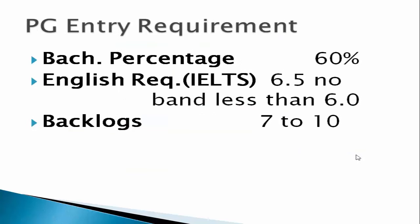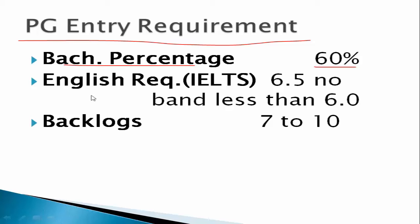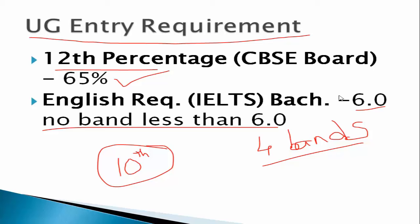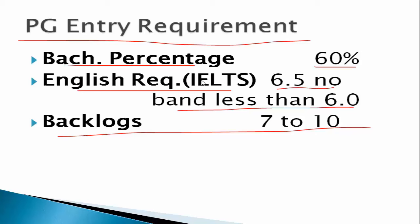For postgraduate requirements, you need a bachelor's degree or MBA degree with a minimum of 60% in your bachelor's. The IELTS score is slightly higher at 6.5 overall, with no band less than 6.0. Deakin will accept 7 to 10 backlogs. So compared to undergraduate where overall IELTS was 6.0, for postgraduate it is 6.5 overall.